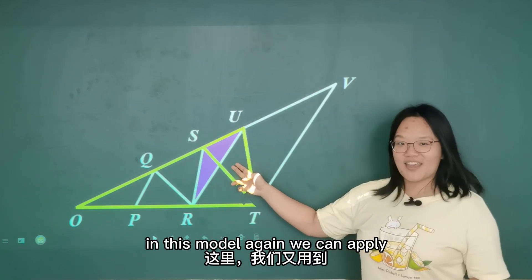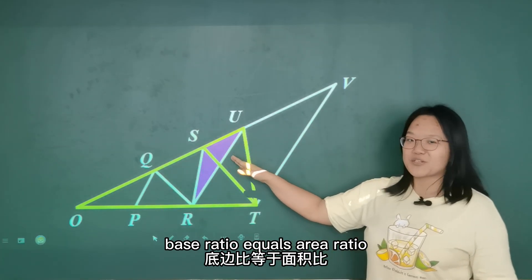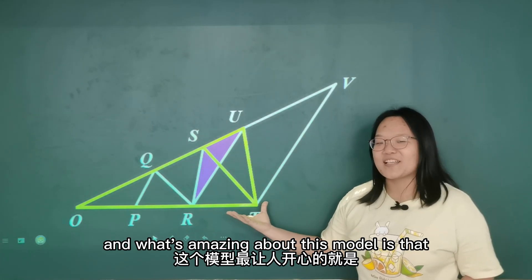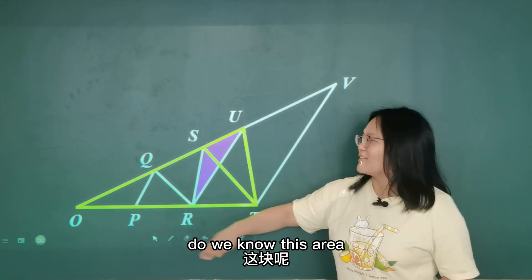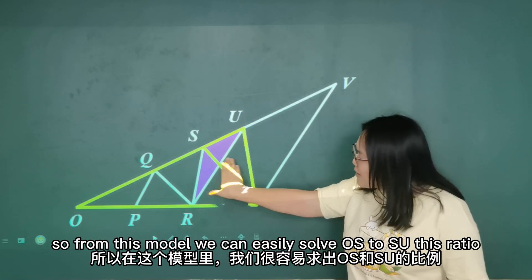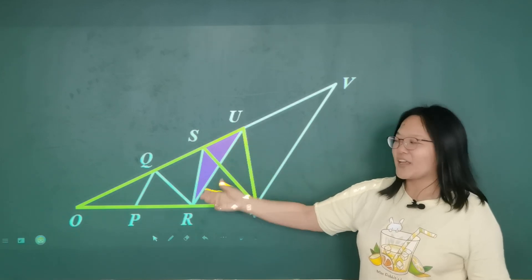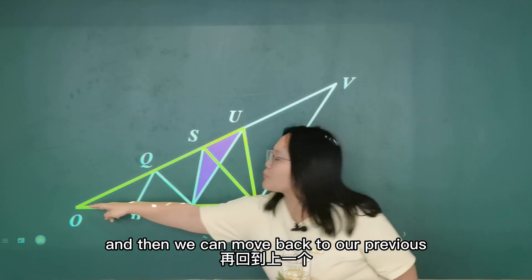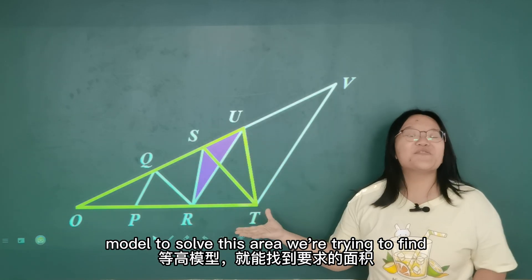OSU are also all connected to point T. So we linked them together to find another equal height model. In this model, again, we can apply base ratio equals area ratio. And what's amazing about this model is that do we know this area? Do we know this area? Yes, we know them both. So from this model, we can easily solve OSU this ratio. And then we can move back to our previous model to solve this area we're trying to find.